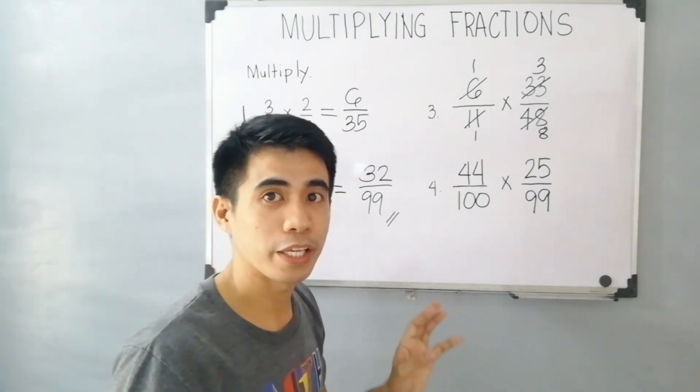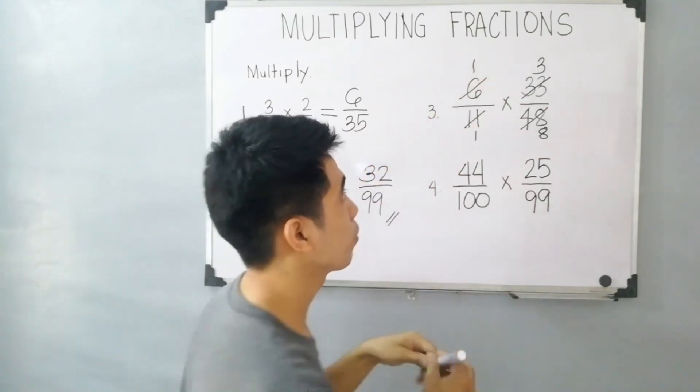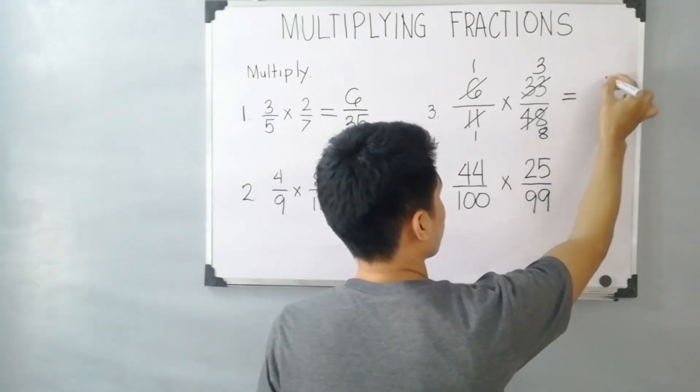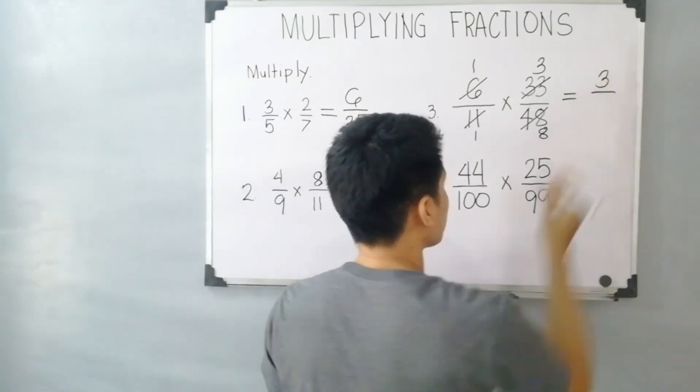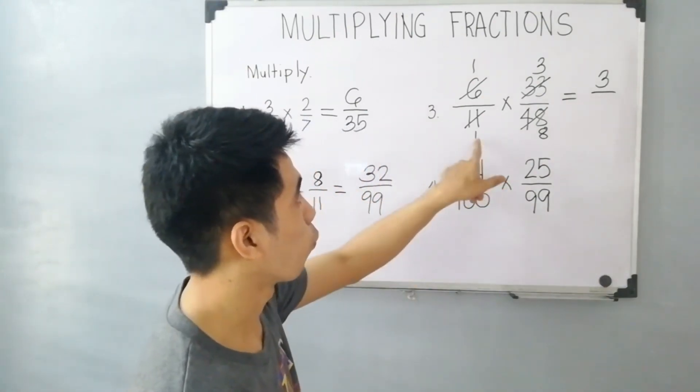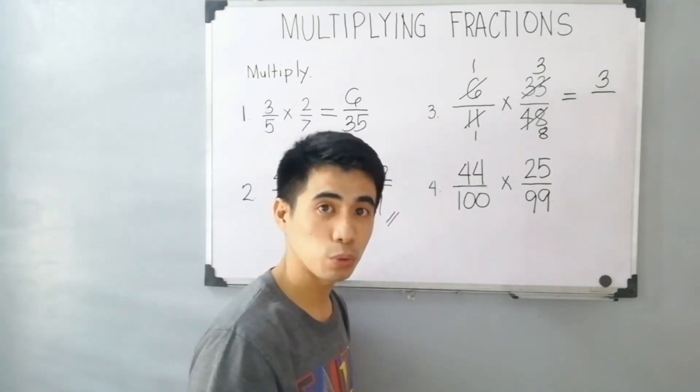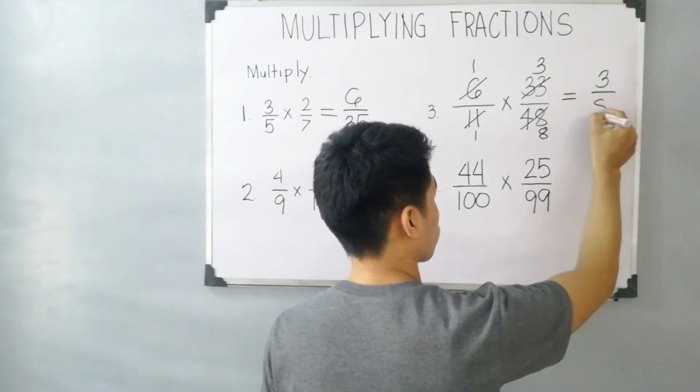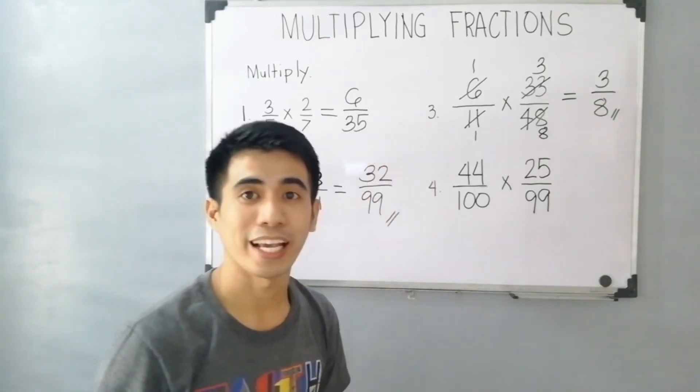1 times 3, that is equal to 3. And then, 1 times 8, that is equal to 8. Therefore, our final answer is 3 over 8.